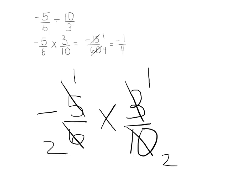So you got 1 times 1 on the top, negative 1 times 1, and then you have 2 times 2 on the bottom. So you get the same answer of negative 1 quarter.